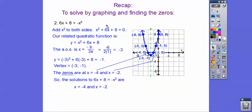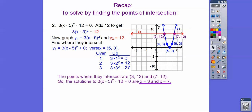Quick recap: when it says solve by graphing to find the zeros, set the equation equal to zero, graph the parabola, and find where it crosses the x-axis. When it says solve by finding points of intersection, keep the non-zero number on the right side, graph the left-side parabola and the right-side horizontal line, and find where they intersect.